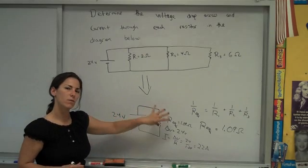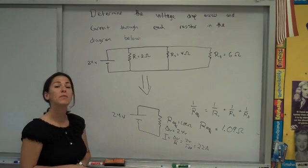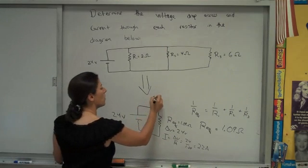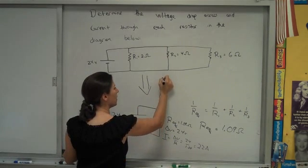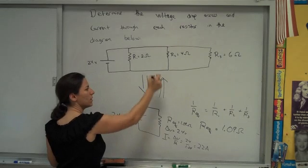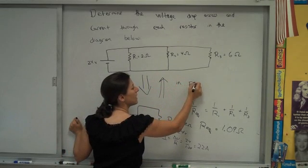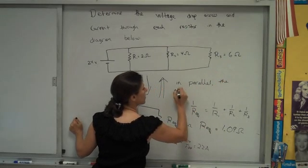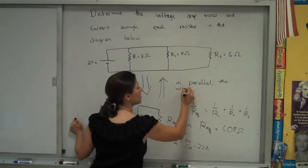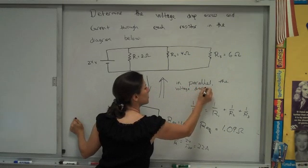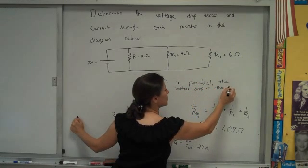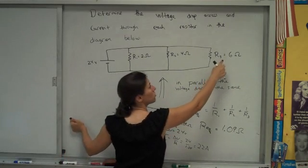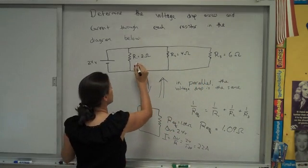And once you solve for everything you can in your simplified circuit, you want to step back to your more complicated circuit. And when you go backward in parallel, back to this more complex circuit, the thing you're going to bring with, the thing that's the same, is the voltage drop. Since the voltage drop here was 24, the voltage drop here is 24, here is 24, and also here is 24.